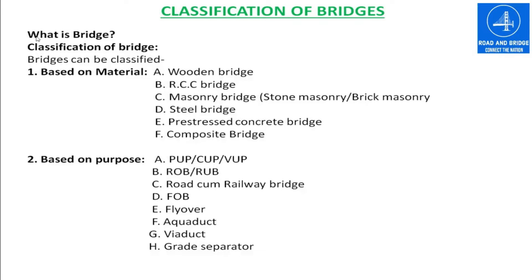What is a bridge? A bridge can be defined in simple terms as a structure which overcomes any type of obstruction like a nala, river, valley, railway track, and highway, and also allows vehicles and pedestrians to move without any hazard.